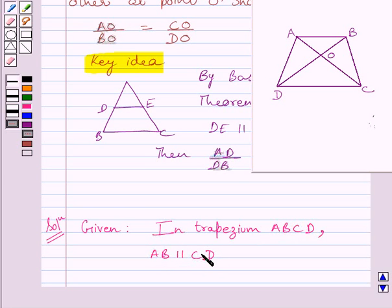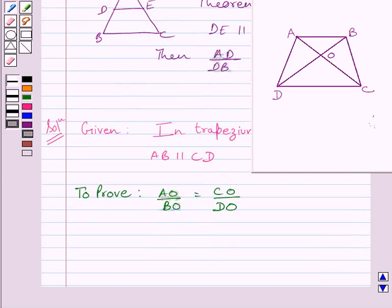Now, we have to prove that AO upon BO is equal to CO upon DO. Now, before starting the proof, we will do some construction.